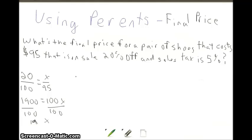We take that $95 and subtract our discount of $19, so we're going to pay $74 for that pair of shoes. Now we have to find the sales tax.